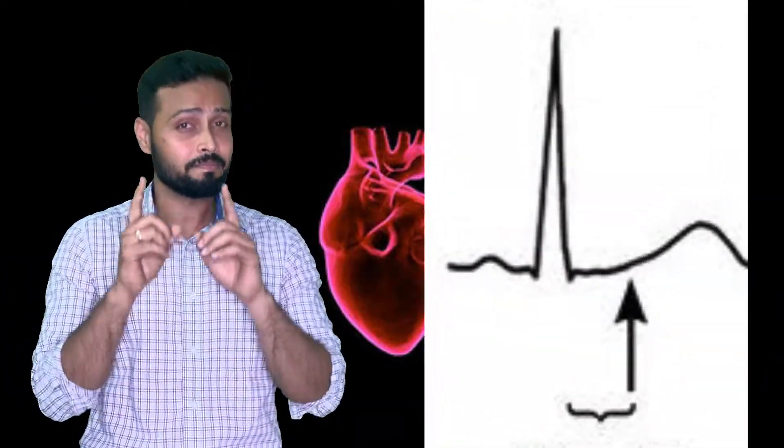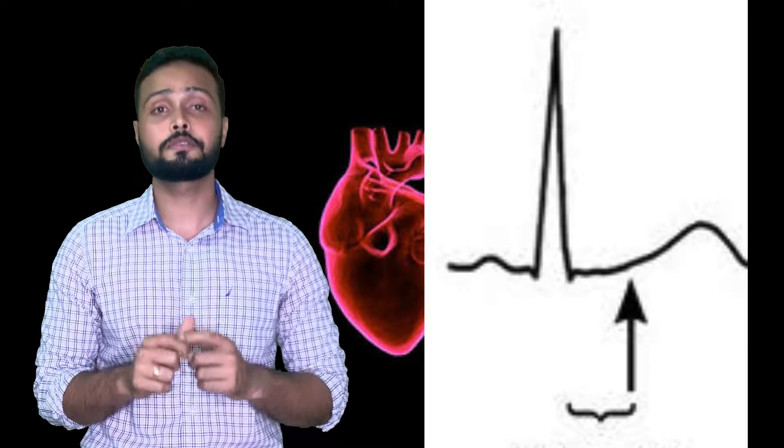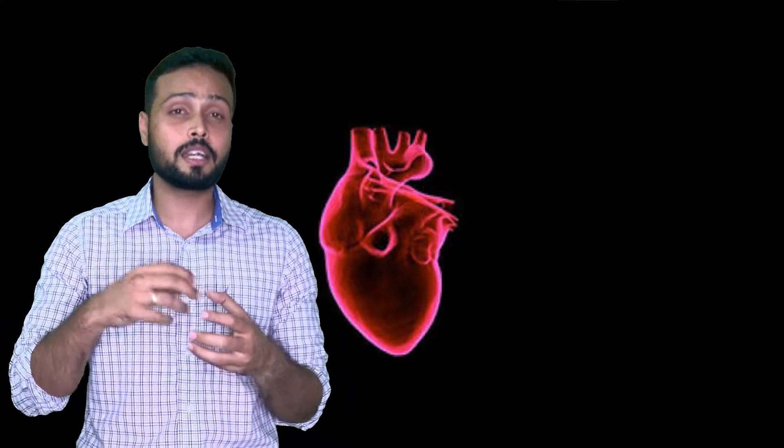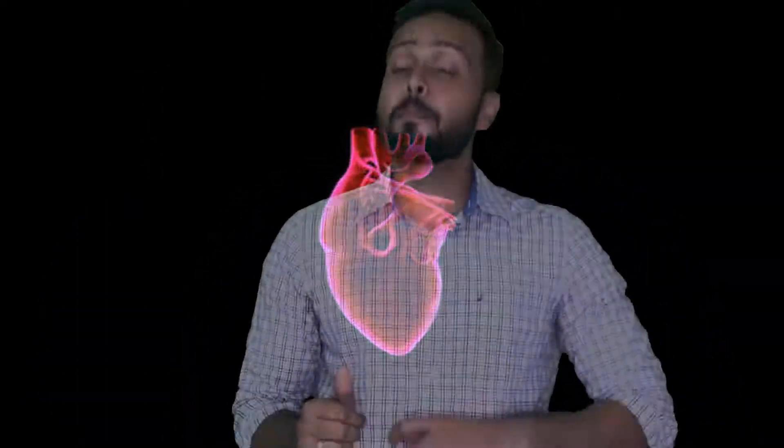If the ST segment is elevated more than 1 mm, that can also be high risk for the patient, because the start of the repolarization time is reduced. Additionally, if the PR interval is decreasing during exercise, that again can be a dangerous situation. These are the abnormalities we should keep in mind while treating patients or interpreting the ECG for better patient care.